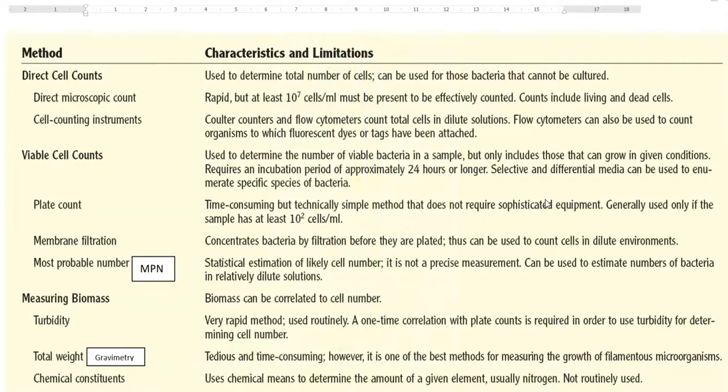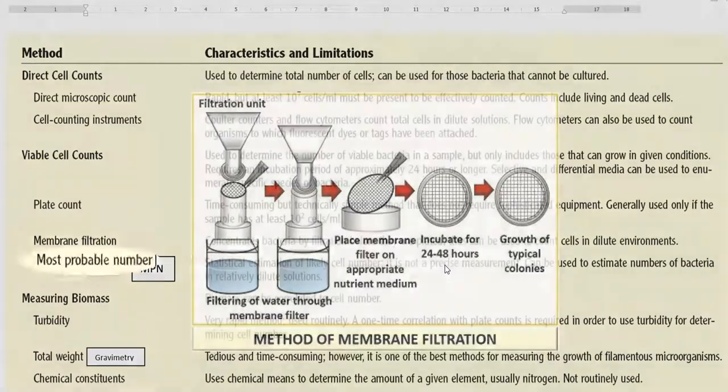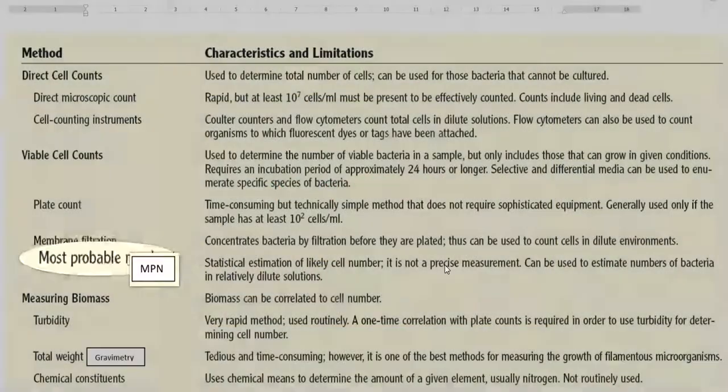The next counting method is viable cell count, that is living cells counting. Here it could be done with the help of plate count, membrane filtration as well as most probable number, which is referred in short as MPN.